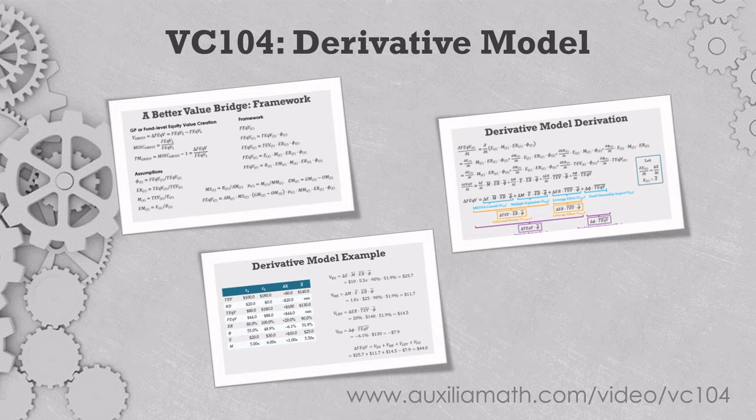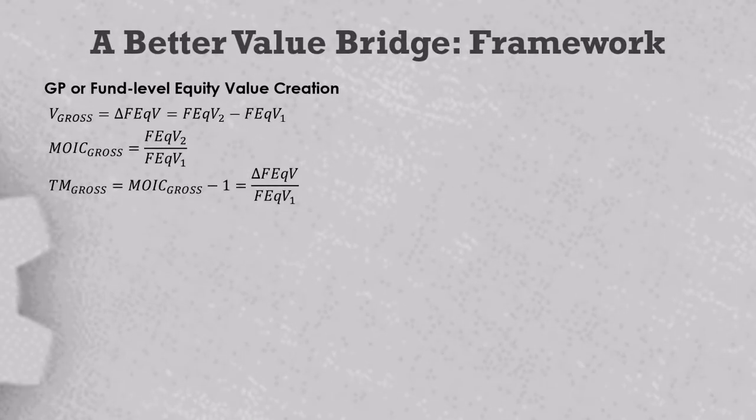We will now describe a better way to do the math. Let us start with a basic setup that applies both to the derivative model of value creation in this video and the logarithmic model of value creation in the next one. Many of the models out there start by measuring company level EBITDA growth or multiple expansion or leverage, and then they work backwards to make the model fit the GP's returns in the deal. What we're going to do is make the GP's return or the fund's return the fundamental unit of value creation from which all of the other value creation components are derived.